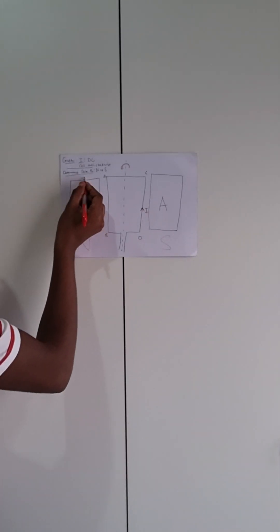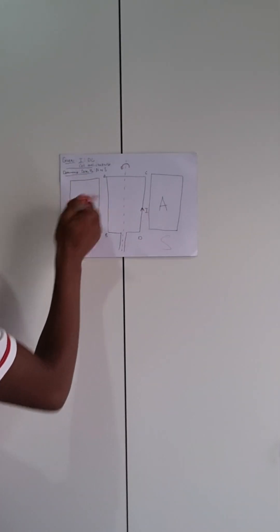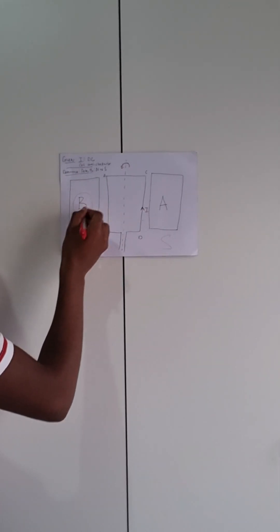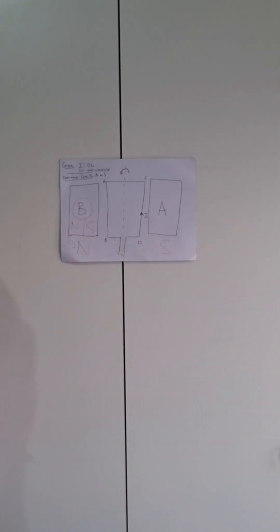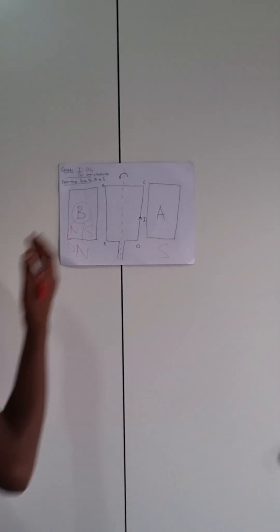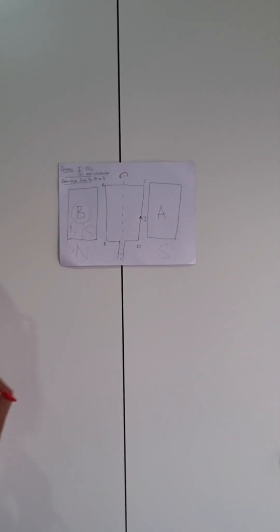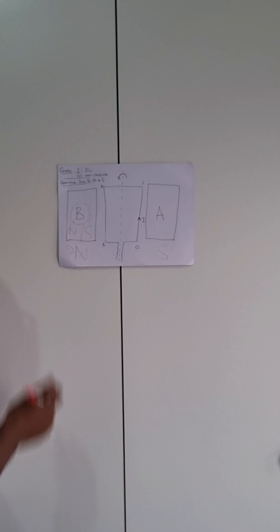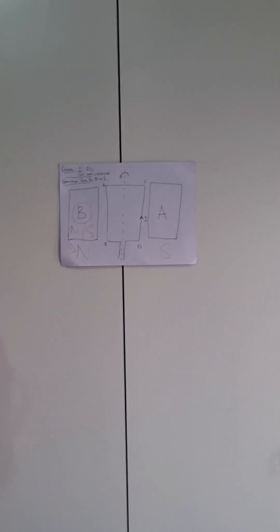So on this side we have north and on this side we have south. They wanted us to determine pole B — pole B represents the north pole, and pole A represents the south pole. That's how we've determined this problem.